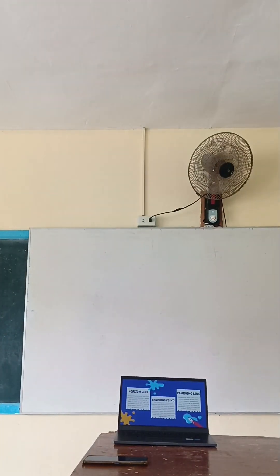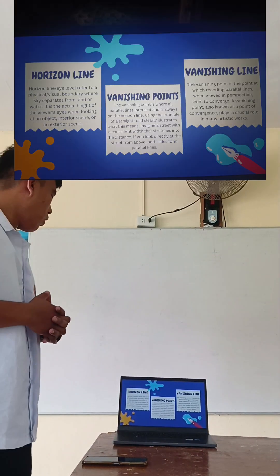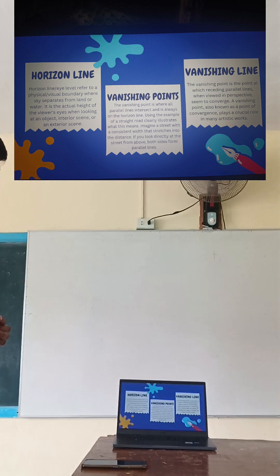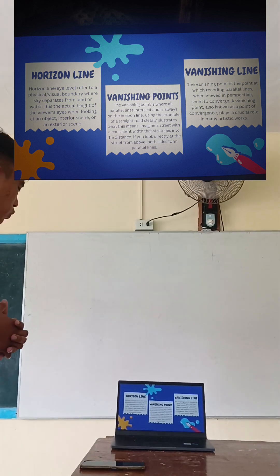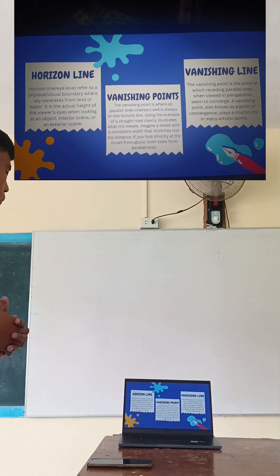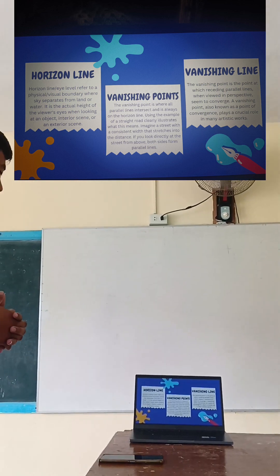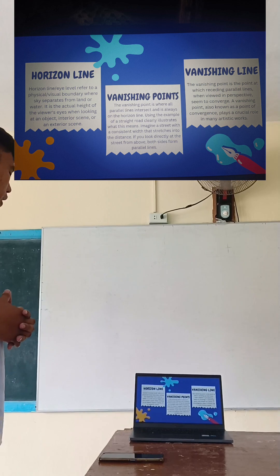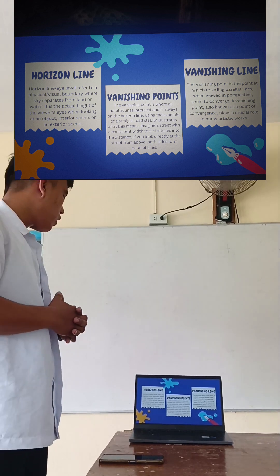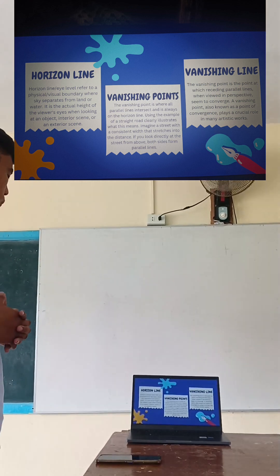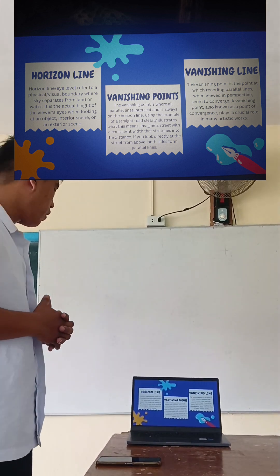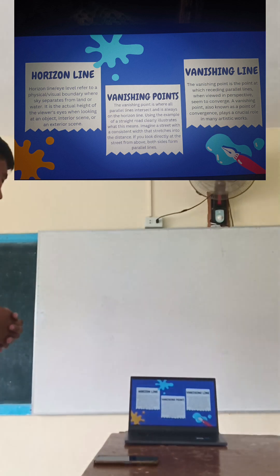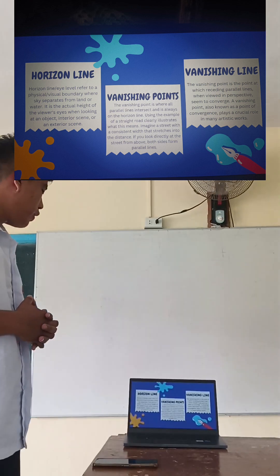First is the horizontal line. The horizon line, or eye level, refers to a physical visual boundary where the sky separates from the land or water. It is the actual height of the viewer's eyes when looking at an object, interior scene, or an exterior scene.